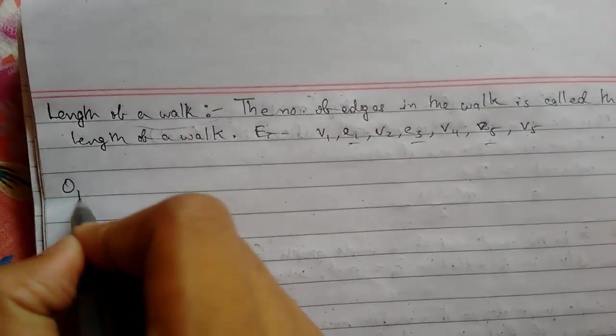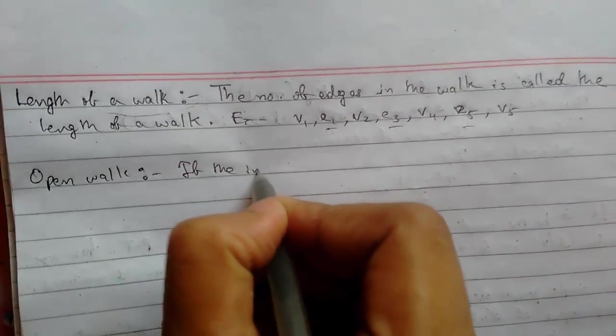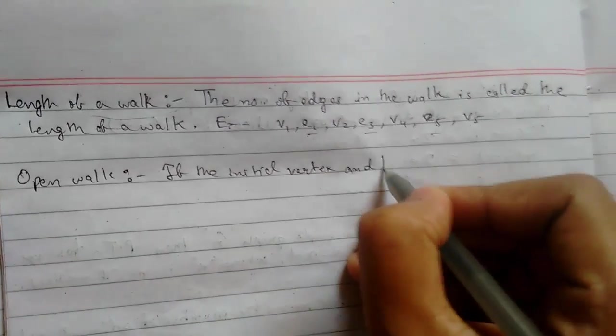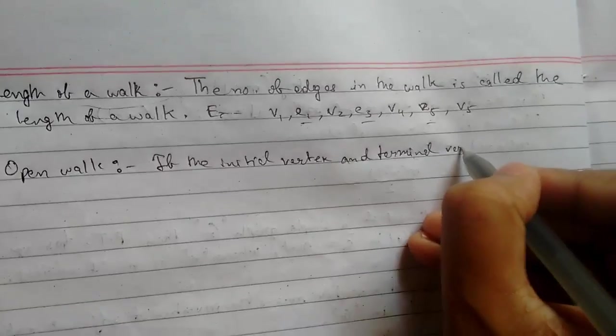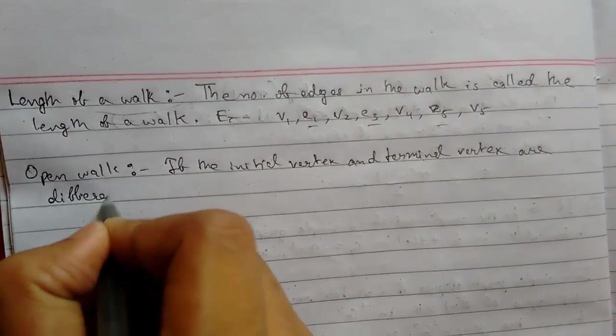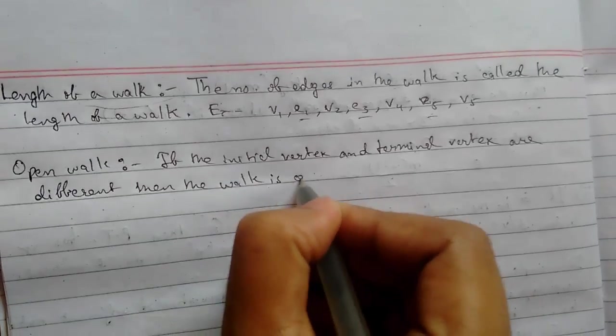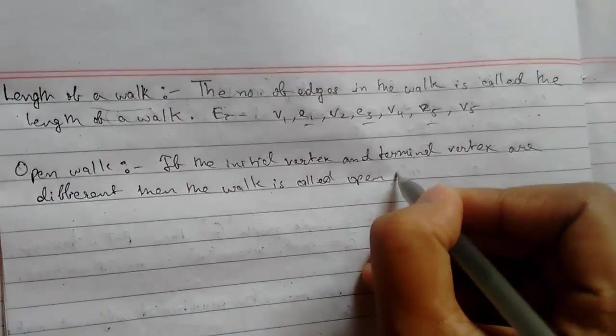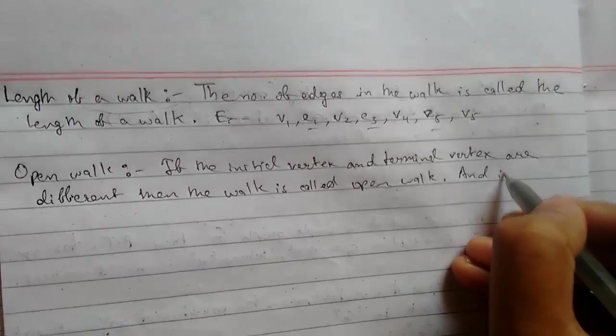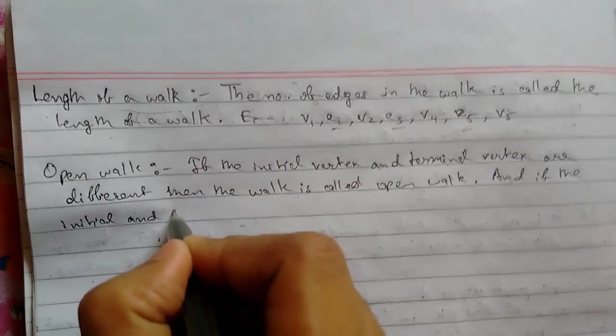Now open walk. So if the initial vertex and terminal vertex or final vertex are different, then the walk is called open walk. And if the initial and terminal vertex are the same...